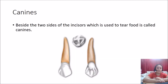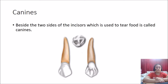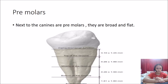Next are canines, which are beside the two incisors. These teeth are used to tear the food, so they are called canines. They are very pointed and sharp, like a fork. There are two canines in each jaw, meaning there are four canines in total. Because they tear the food, they are called tearing teeth.